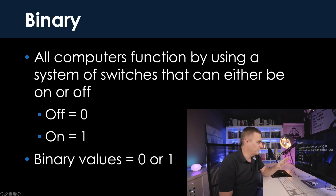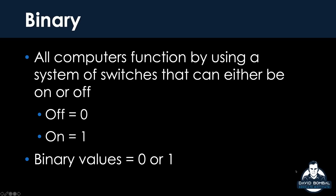A computer basically only has two states: current or no current on a circuit. All computers function by using a system of switches that can either be on or off. Off equals zero, on equals one. Our binary values are either zero or one. Make sure you understand that binary consists of two states or two values — zero or one.